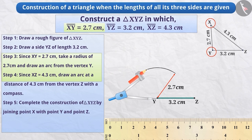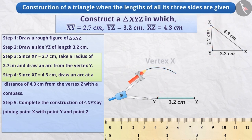The distance of each point on the arc is 2.7 cm from the vertex Y. That is, one point of this arc is the vertex X of triangle XYZ. Just think, how will we find the exact position of the vertex X? Think for a while.